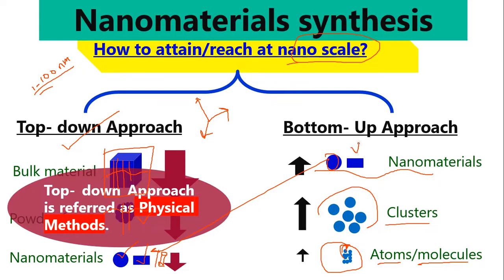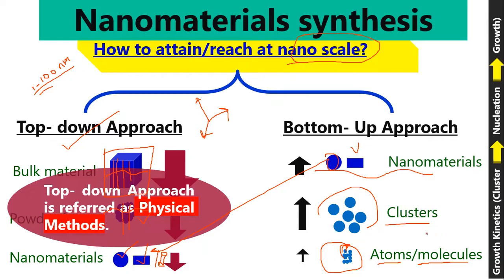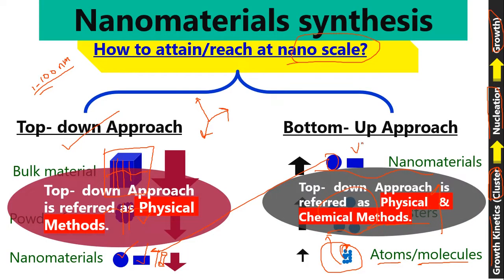This is also called the self-assembling method, where one atom deposits on the substrate, then another molecule or atom comes and builds a thin layer, giving us a nanoscale thin or thick sheet. The growth kinetics work as follows: atoms or molecules first form a cluster, then through nucleation they form the nanostructured material. This bottom-up approach uses both physical and chemical methods.